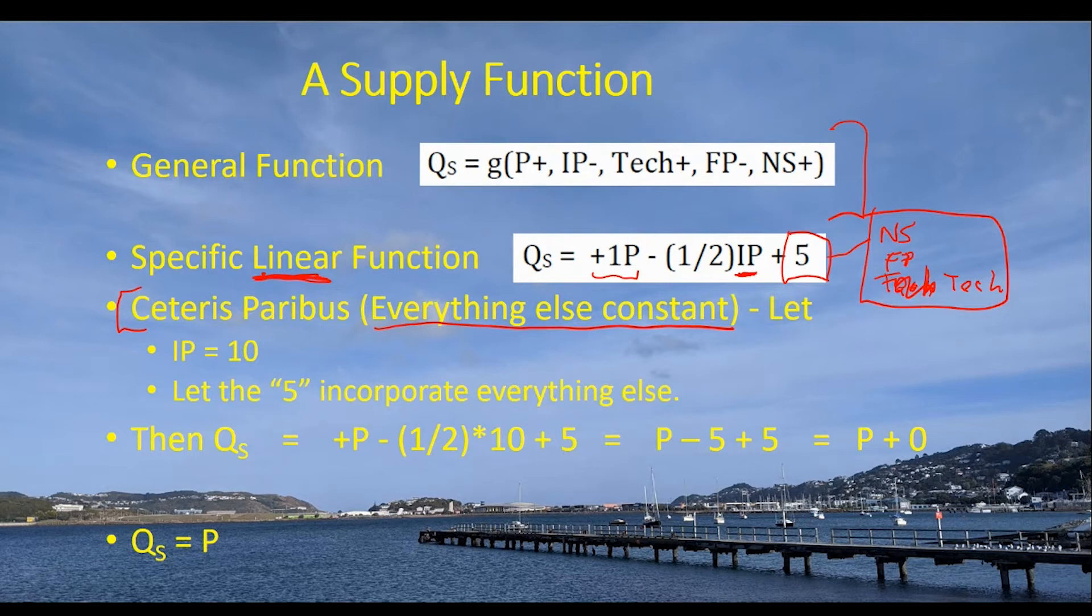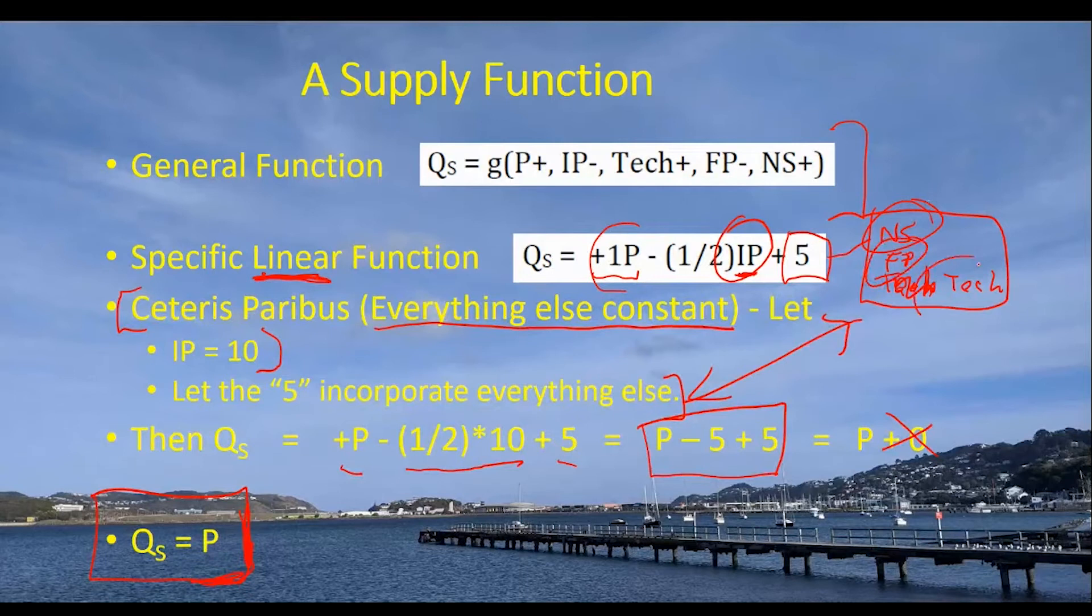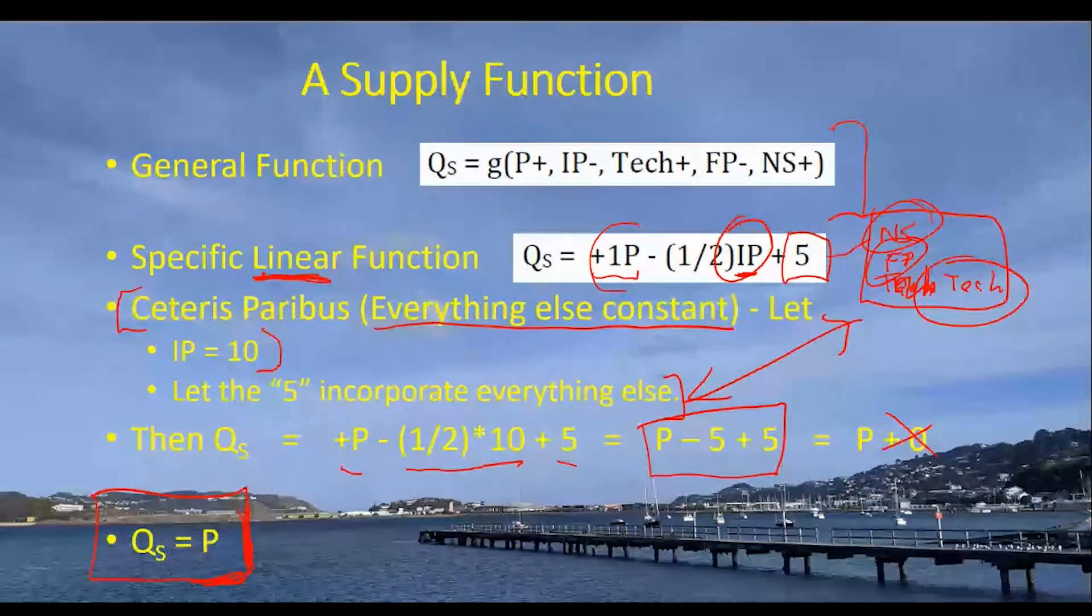So let's plug things in. Let's say the input prices takes a value of 10. The five incorporates everything else like I just pointed out. And we'll plug in values to get an equation for the supply function itself. And when we do that, you get plus P minus one half times 10 plus five. That's going to reduce to P minus five plus five, which is P plus zero. So get rid of that. And we end up with this equation. Quantity supplied is equal to just the price. Again, the simplest supply function we could imagine or envision.